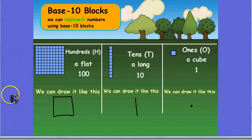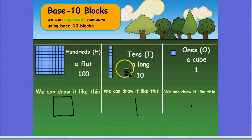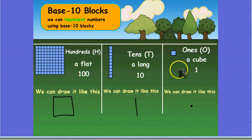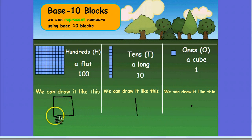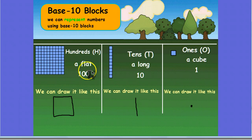Thinking about base 10 blocks, we know that the hundreds looks like this, and it's called a flat, and it's worth one hundred. The tens looks like this — we call it a long, and it's worth 10. And we also have ones that look like this — we can call it a cube, and it's worth one. If we draw that on our whiteboards, we can show a flat as a square, a 10 as one straight line, and a 1 as a dot.